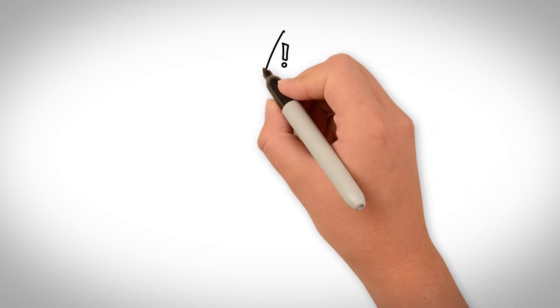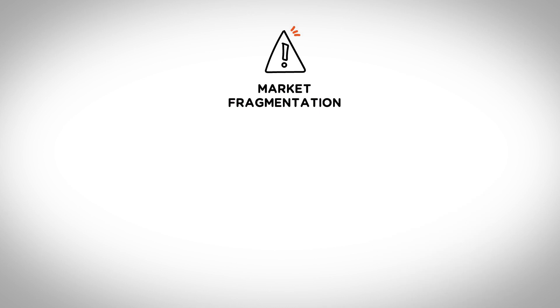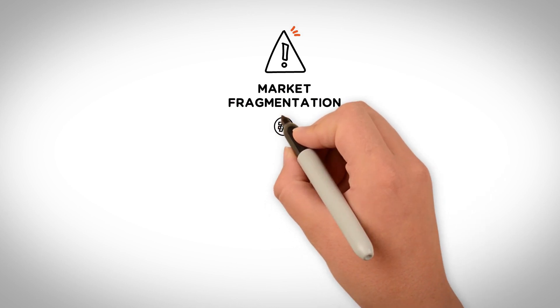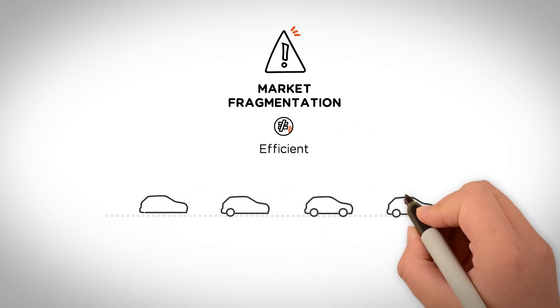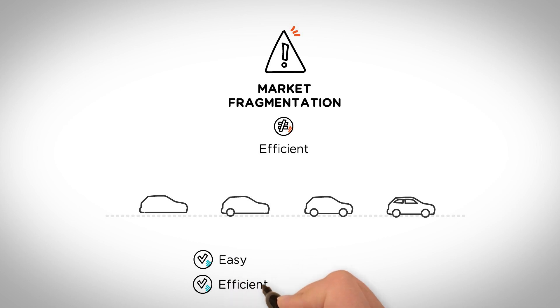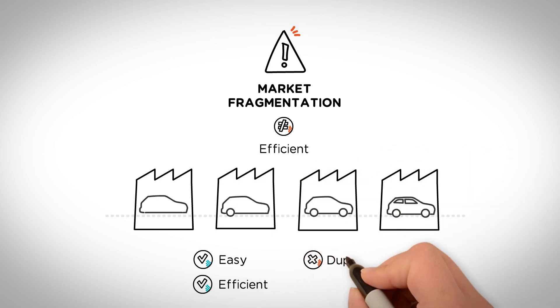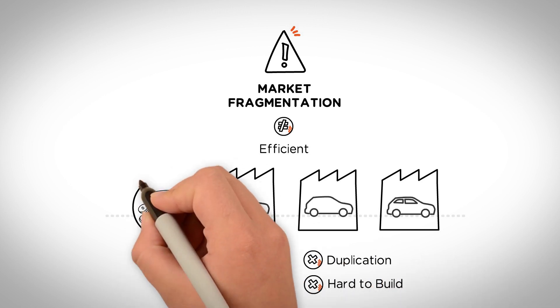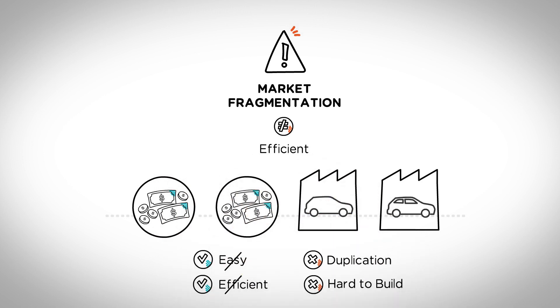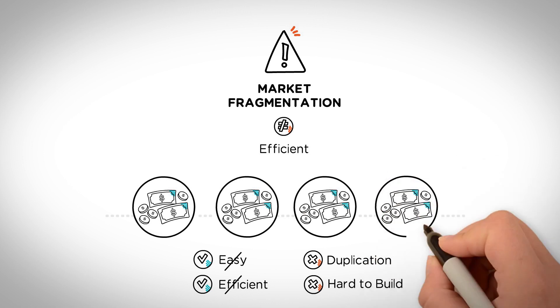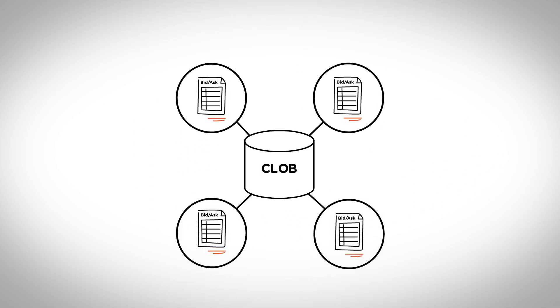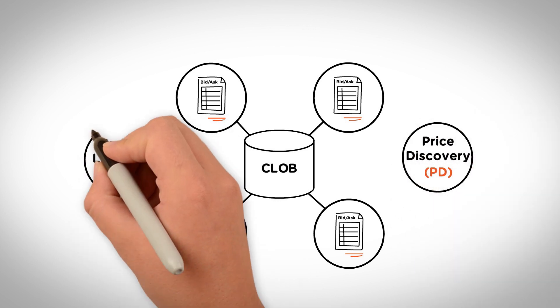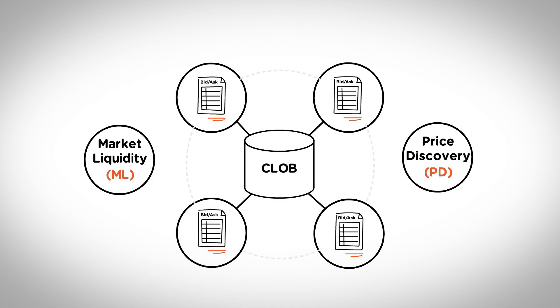While market liquidity and price discovery play important roles in a financial market, they are negatively affected by the risk of market fragmentation. For those unfamiliar with the phrase, market fragmentation is the opposite of efficient. Take the example of a single assembly line that makes it easier and more efficient to build standardized vehicles — market fragmentation would divide the production of separate parts into different factories, duplicating operational overhead and making it harder to build each vehicle. In financial markets, market segmentation is generally not great for price discovery either, as it divides the trading activity, also known as liquidity, into smaller separate buckets. Price discovery would be more efficient if all trading activity was happening in one larger, deeper bucket.